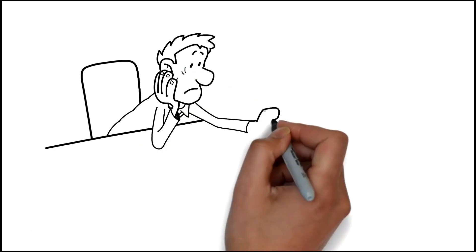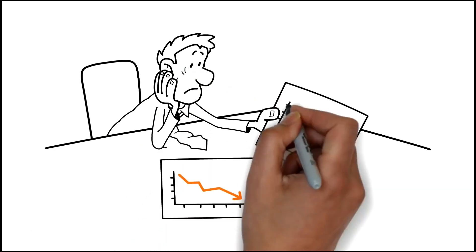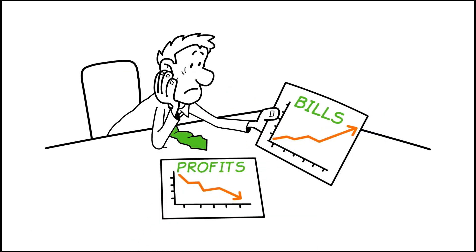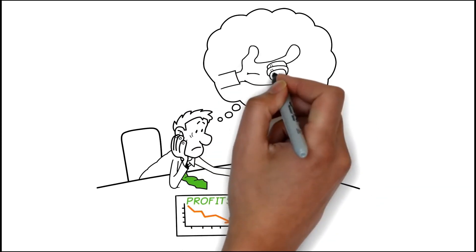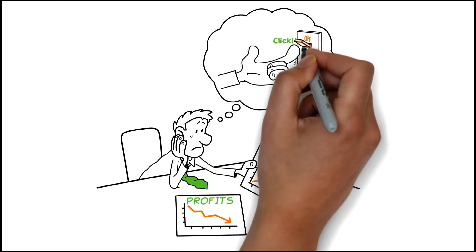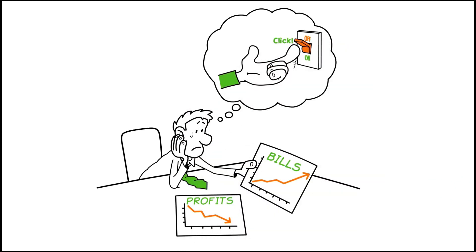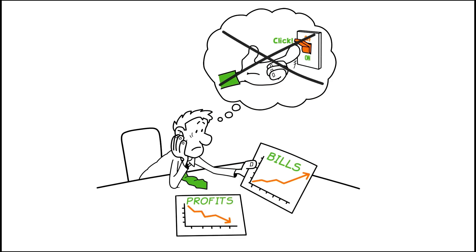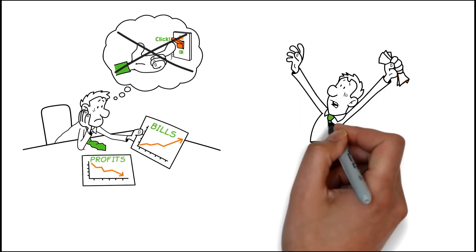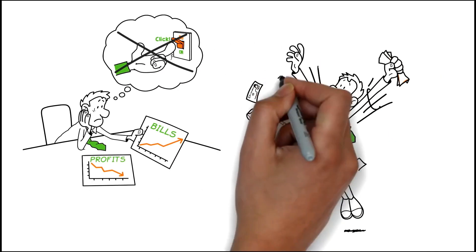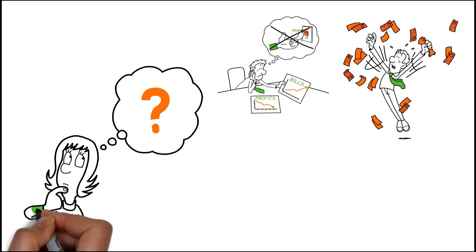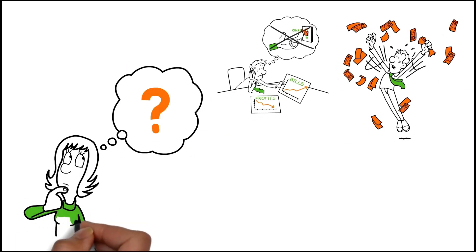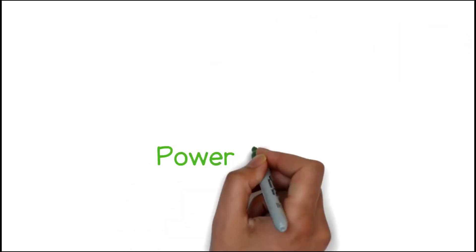Are complicated electricity bills and rising utility charges eating into your profits? There is one charge on your electricity account that can be controlled and reduced without the need to turn off your electrical equipment. If you haven't addressed this component yet, your company could be losing thousands of dollars per month. What are we talking about and why is it important? We're talking about Power Factor Penalties.